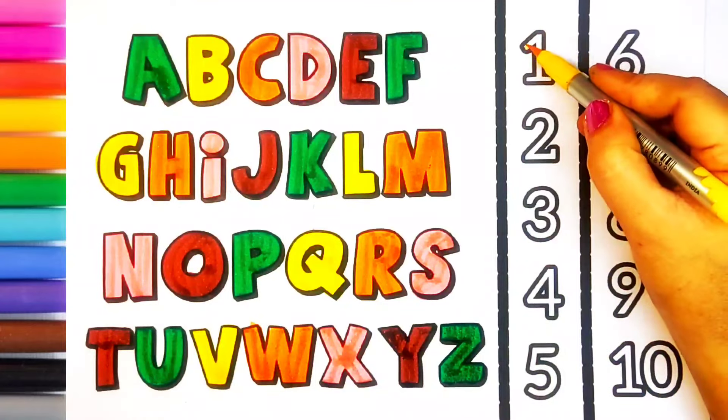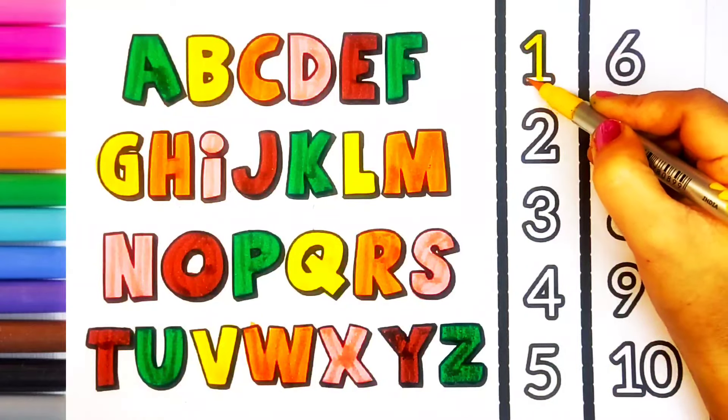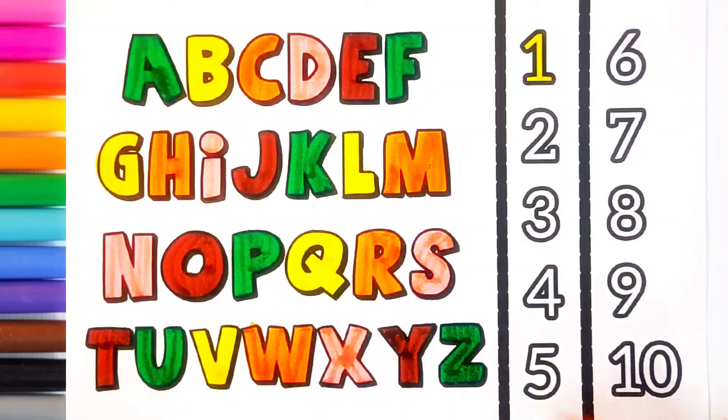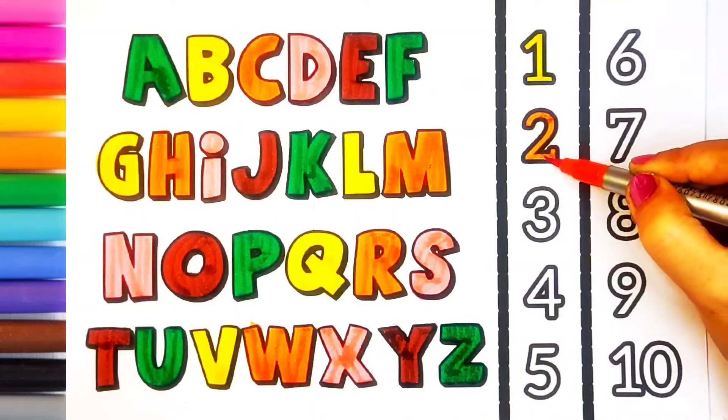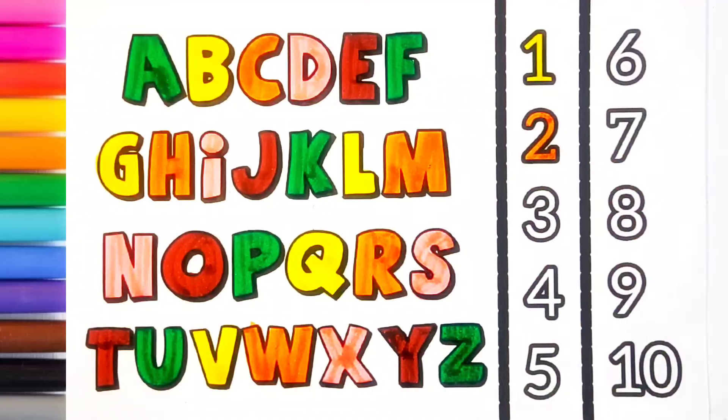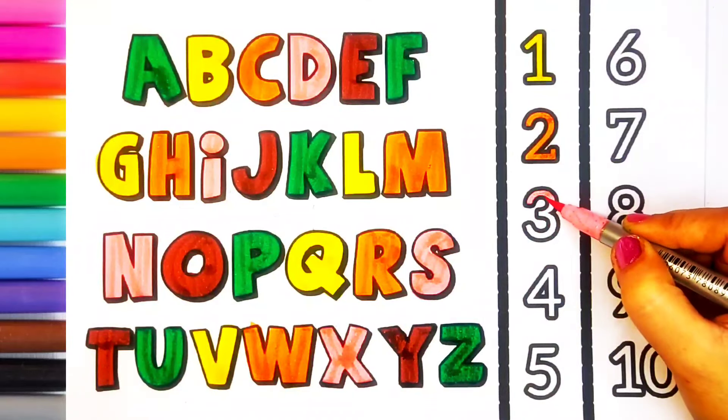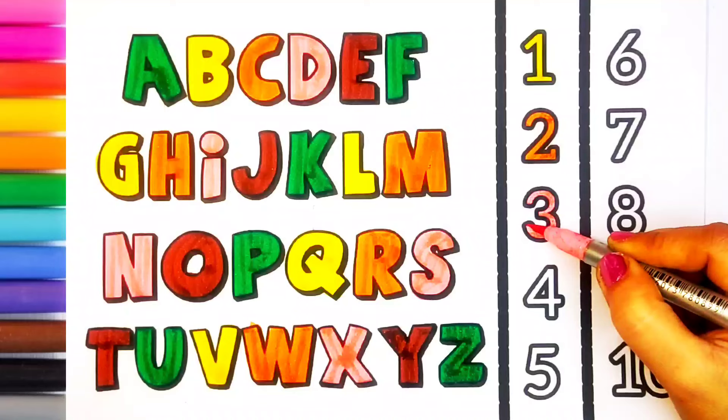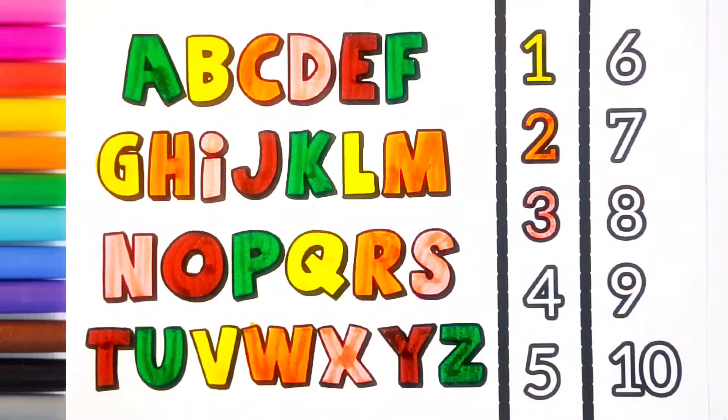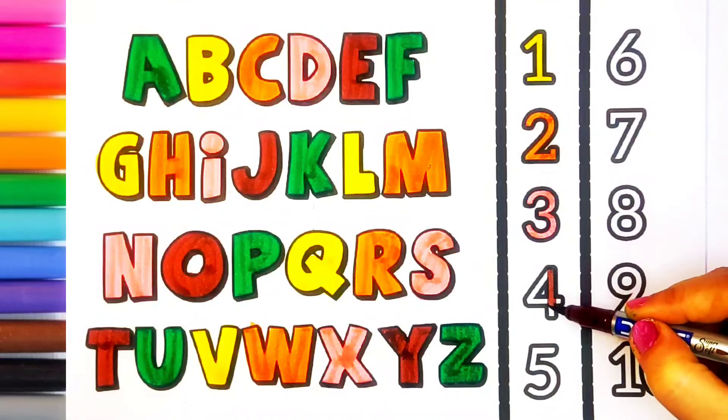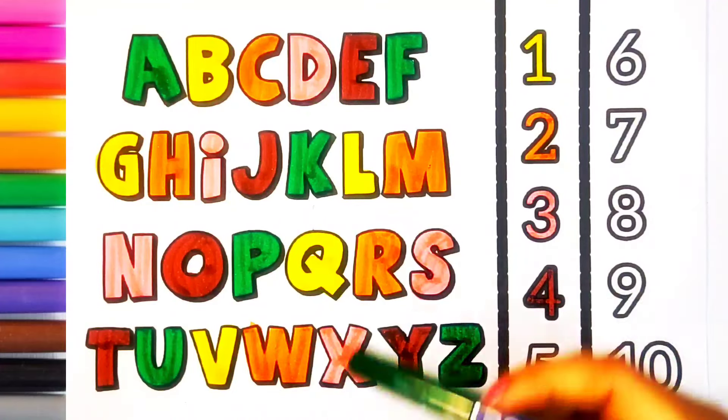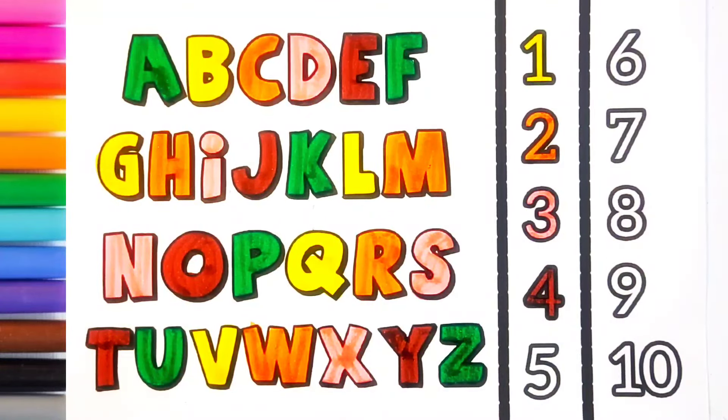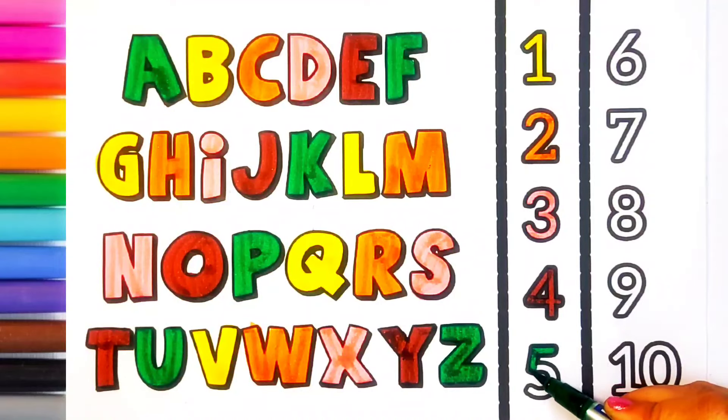Yellow color, one. Orange color, two. Pink color, three. Brown color, four. Dark green color, five.